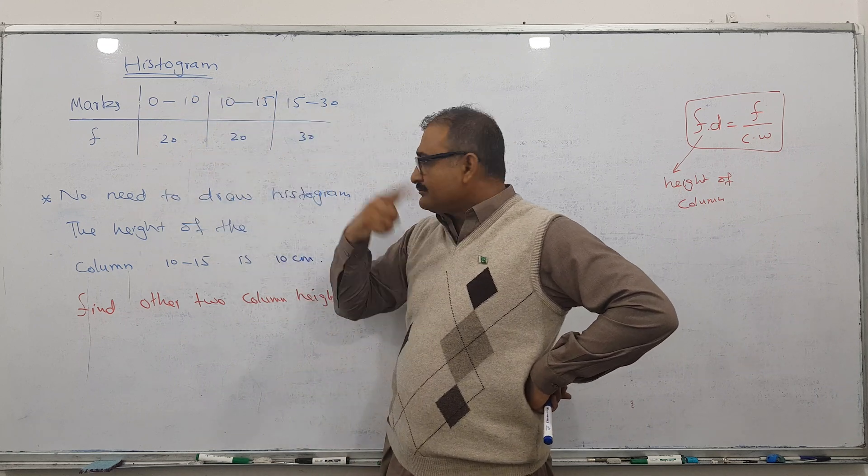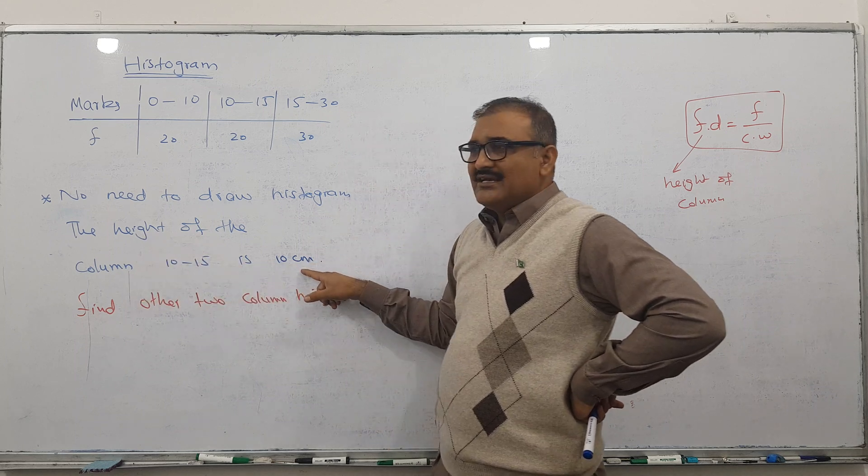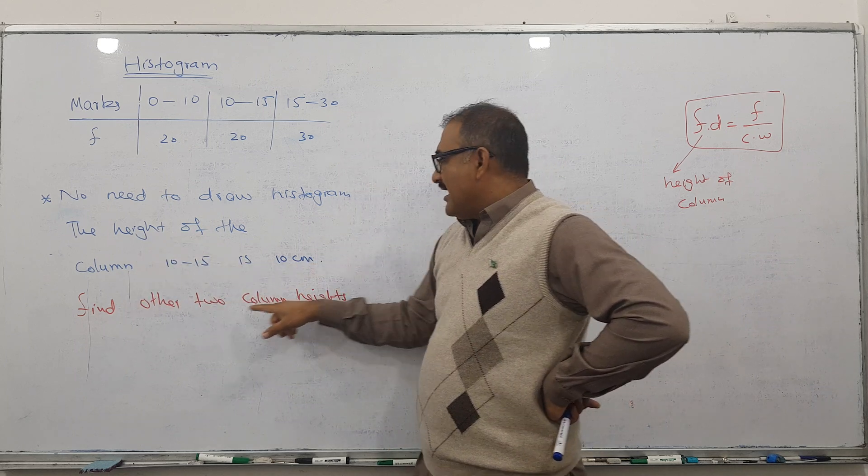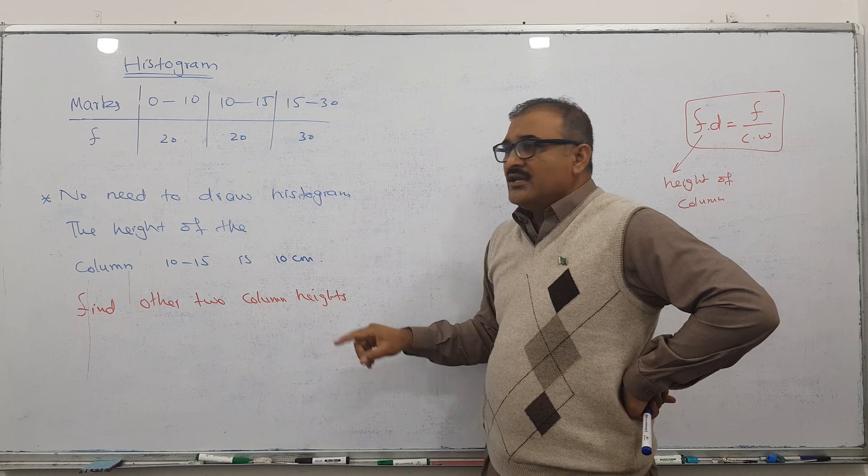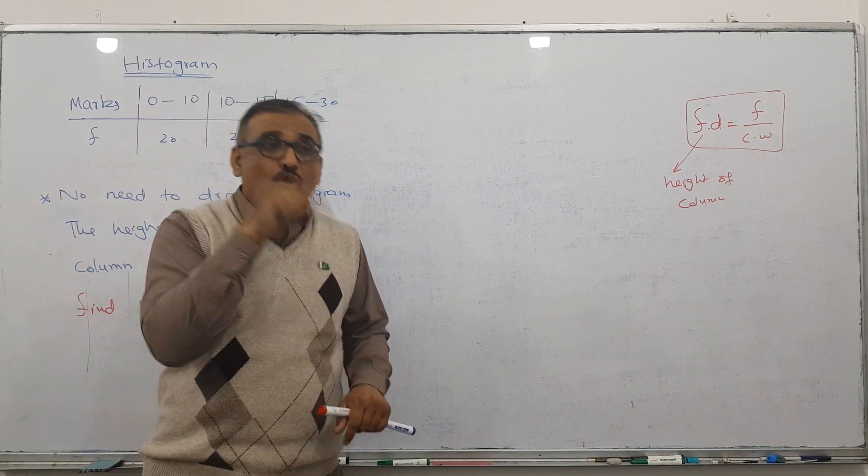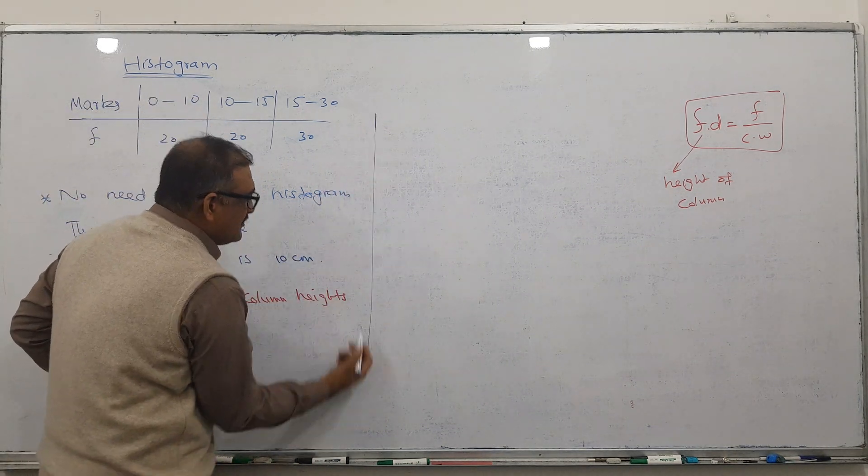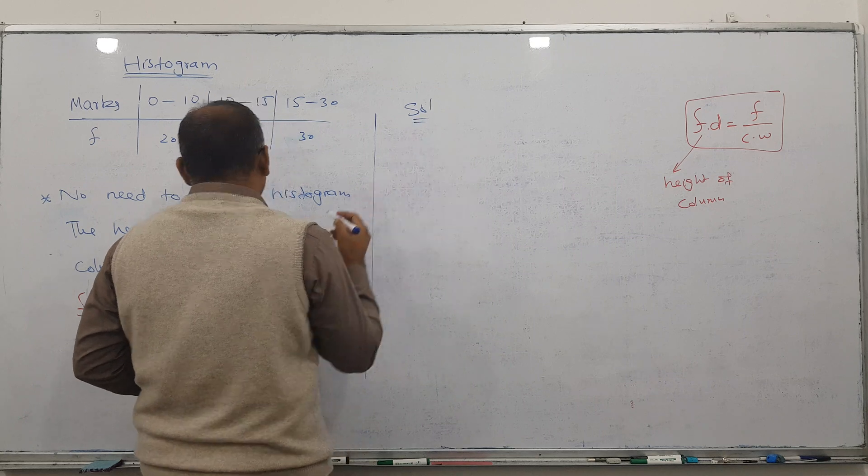So the height of column 10 to 15 is 10 centimeters, and you need to find the other column heights. What you will do is start the question from the given height. Let's start the solution. He used column number 2, so I'll start from here.